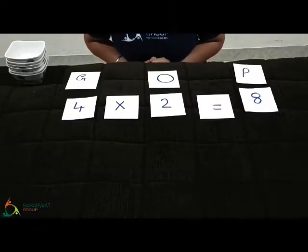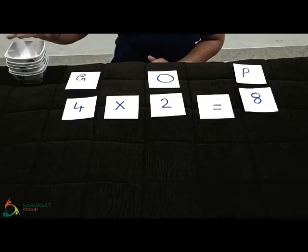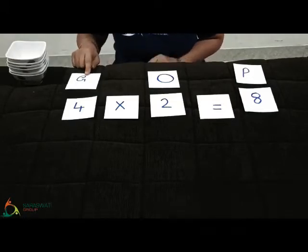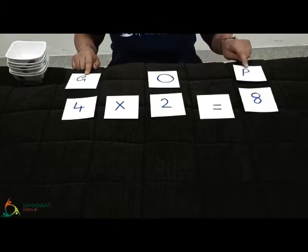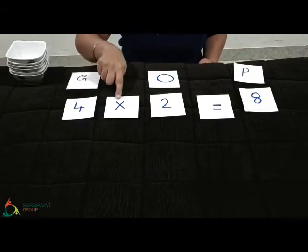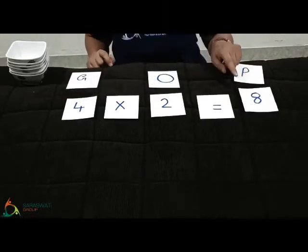Children, now we will do practical multiplication with the help of these balls. You already know this is group, this is object, and this is product. So the first example we are going to take is 4 multiply by 2 equals 8. So how we got the 8?